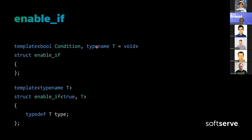Let's take a look at enable_if. More or less it looks like this — this is a possible implementation. It's a templated struct with two template parameters: first, the condition that is a boolean, and the second is some type T with a default value of void. Then we have a specialization: if enable_if has condition equal to true, the structure will have a member type called 'type' of the same type as the second template parameter.